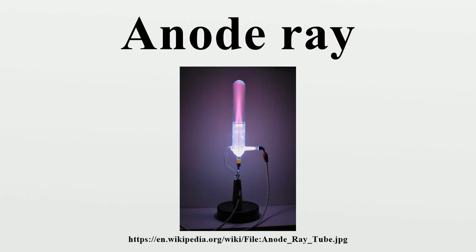Cathode rays are streams of electrons which move toward the anode. Goldstein called these positive rays 'Kanalstrahlen,' meaning channel rays, or canal rays, because they were produced by the holes or channels in the cathode.